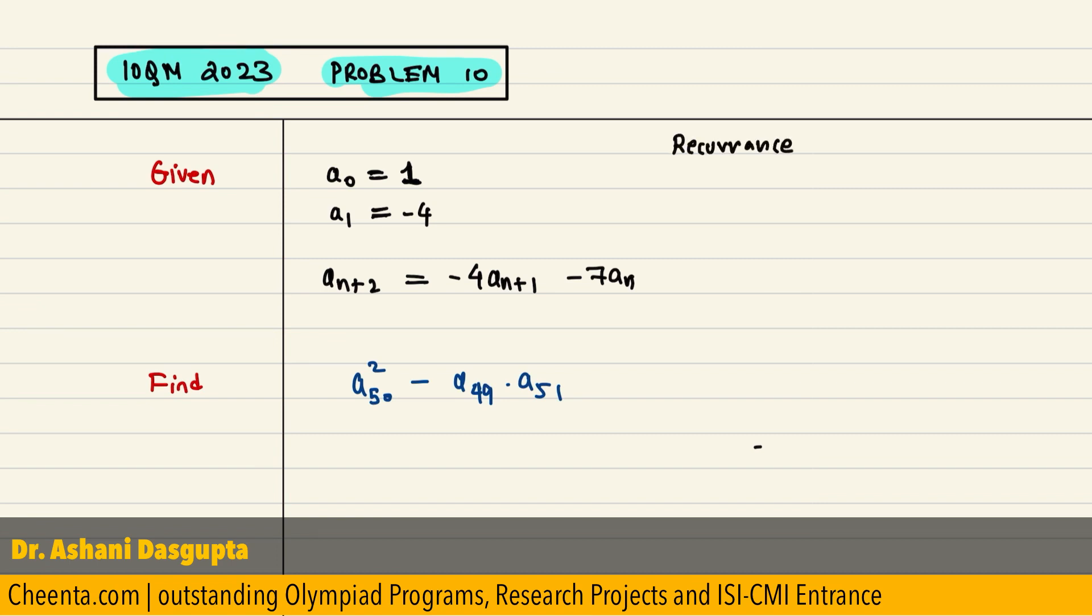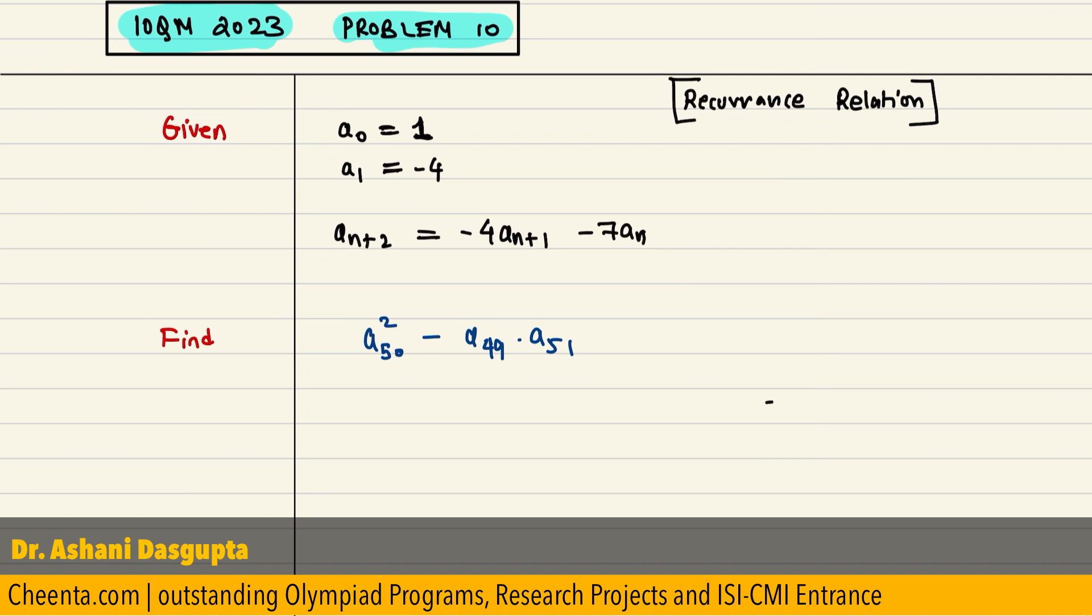If you are not familiar with recurrence relations, I'll explain it a little bit for you. Basically a sequence of numbers is given, let's say if I tell you 1,